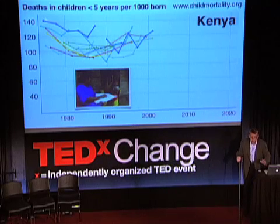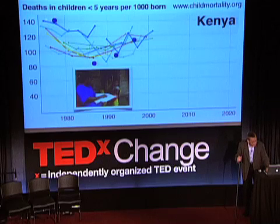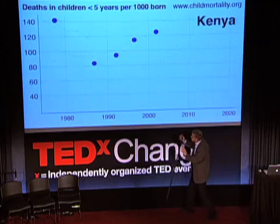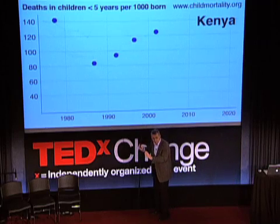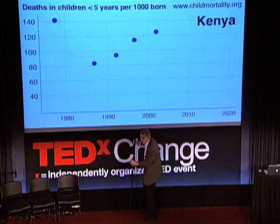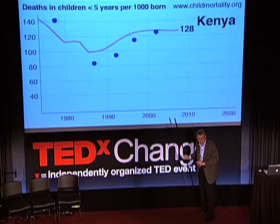I'll simplify it for you and give you one average point for each survey. This was 1977, 1988, 1992, 1997, and 2002. When the experts in the UN have these surveys in their database, they use advanced mathematical formulas to produce a trend line. And the trend line looks like this — it's the best fit they can get of these points.